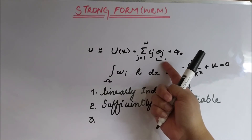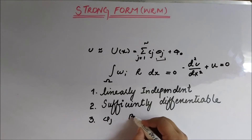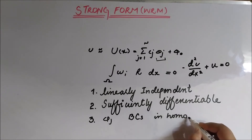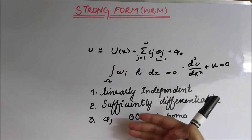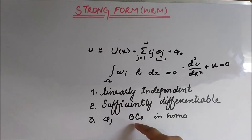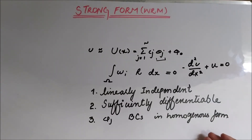The third condition is that phi_j should satisfy the boundary conditions in homogeneous form. I am not discriminating between essential and natural boundary conditions — phi_j should satisfy both essential and natural boundary conditions in the homogeneous form. We have talked about what is meant by homogeneous form satisfaction in previous videos, so there is no need to repeat that.